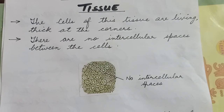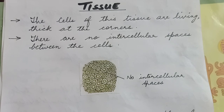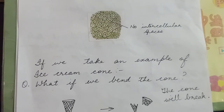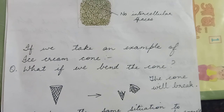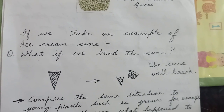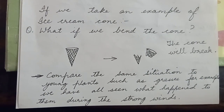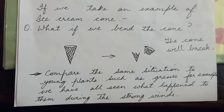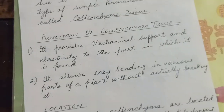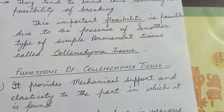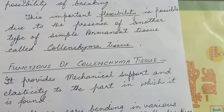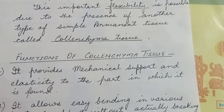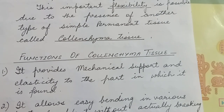To understand collenchyma tissue, we take an example of an ice cream cone. If we bend the cone, it will break. Now compare the same situation to young plants such as grasses — we have all seen what happens to them during strong winds. They tend to bend, thus lowering the possibility of breaking. This important flexibility is possible due to the presence of collenchyma tissue.